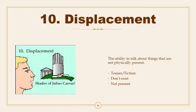Tenth: Displacement. It is the ability to talk about things that are not physically present — tenses or fiction that don't exist in the immediate environment. This means that the speaker can talk about things which are not present, either spatially or temporally. For example, human language allows speakers to talk about the past and the future as well as the present. Speakers can also talk about things that are physically distant, such as other countries or the moon. They can even refer to things and events that do not actually exist, such as the Easter Bunny, the Earth having an emperor, or the plantation of Tara in Gone with the Wind.